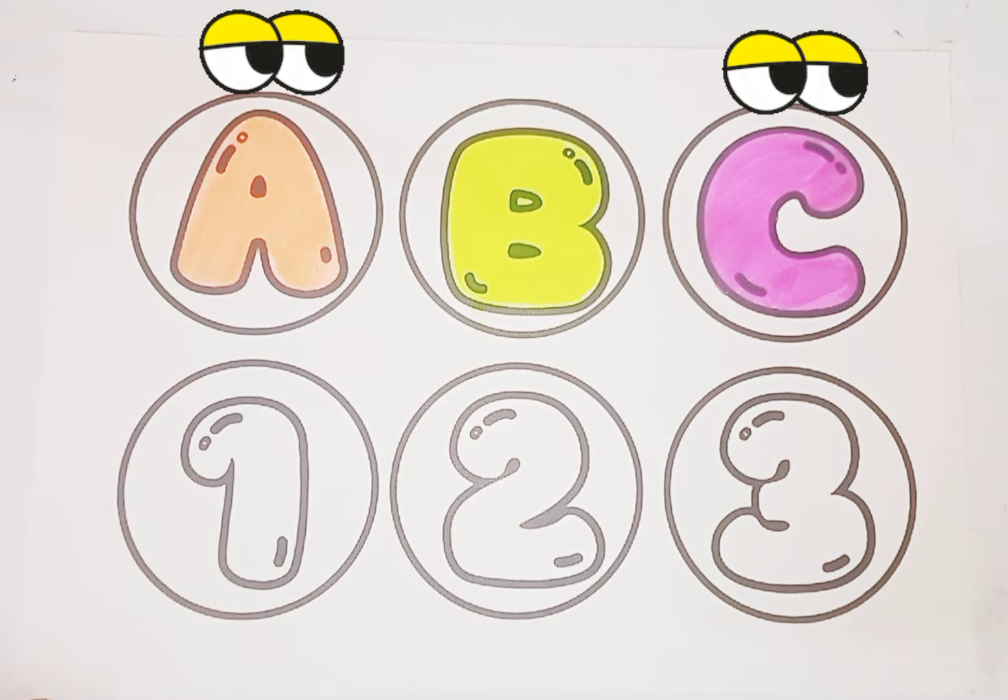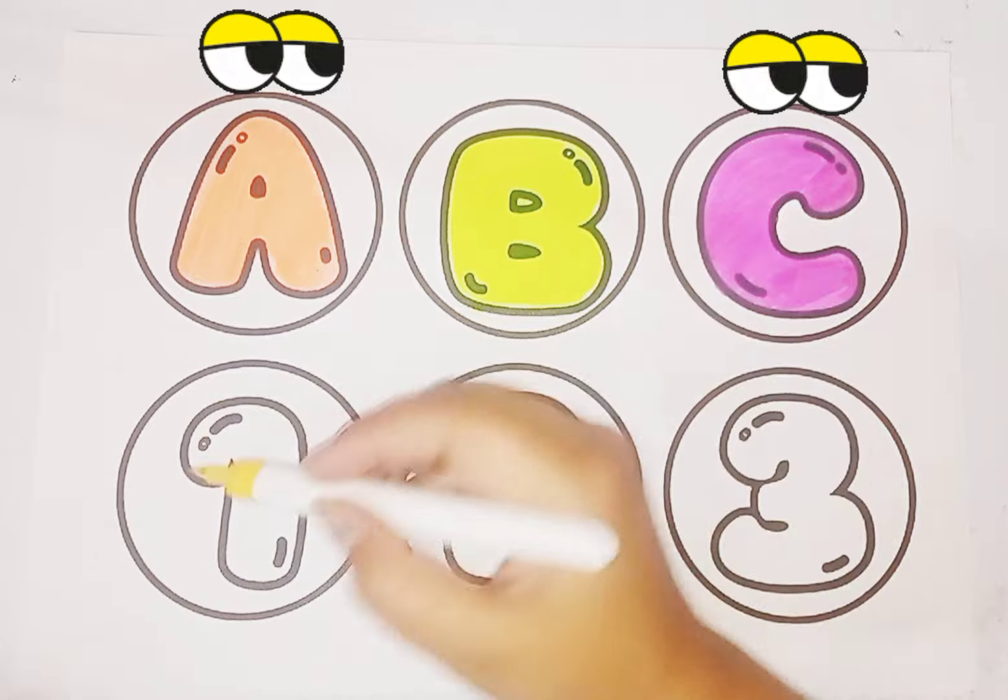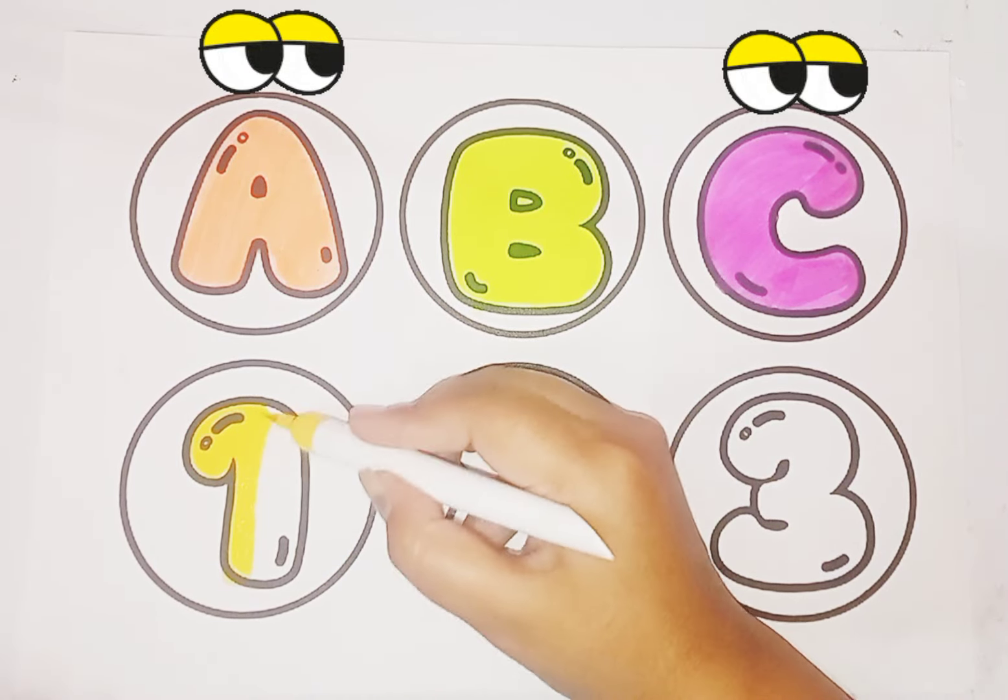Now we learn number 1, 2, 3 and their spelling. Yellow color number 1. O and E. 1.